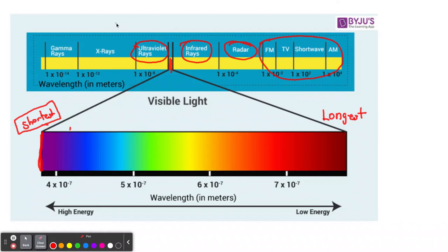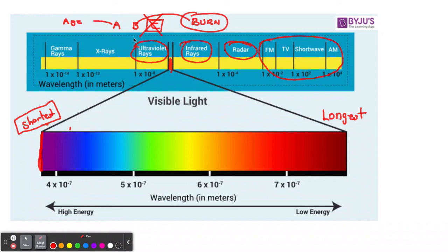Blue light has a higher frequency than red light. Visible light is not what's burning us — it's the ultraviolet rays. There are three types: ultraviolet A, ultraviolet B, and ultraviolet C. C doesn't enter our atmosphere, so we're only concerned with A and B. Think of it this way: UVA can age you, and UVB can burn you. You also get vitamin D from UVB, which is very important — you get more vitamin D from UVB than from taking vitamin D supplements.